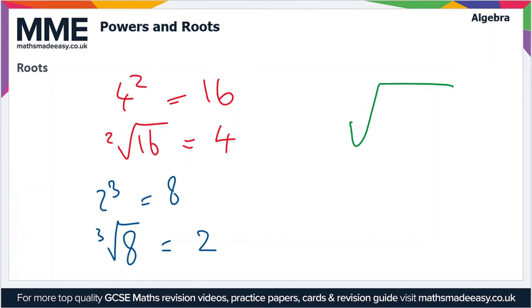But if it's a cube root, for instance, then we'd write a three. Or if it's a fourth root, then we would write a little four there. So you could have any roots, you could have a fourth, a fifth, a sixth root and so on.